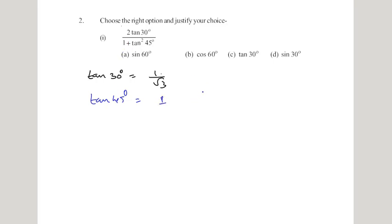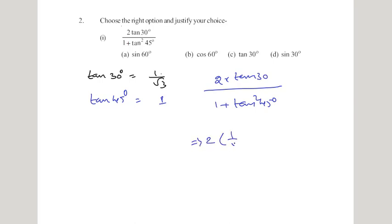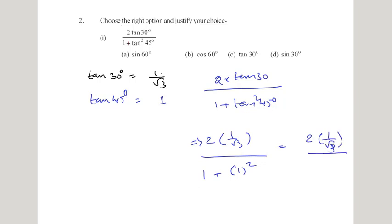Now we substitute in the question: 2·tan30° divided by (1 + tan²45°). This becomes 2·(1/√3) divided by (1 + 1²), which is 2·(1/√3) divided by (1 + 1), that is 2·(1/√3) divided by 2.